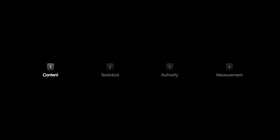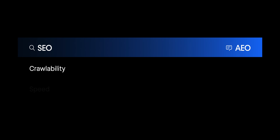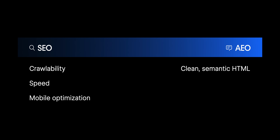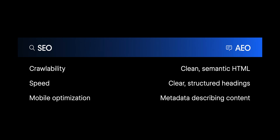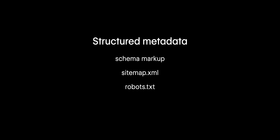Next, let's talk about the technical foundations for good AEO. In traditional SEO, most focused on crawlability, speed, and mobile optimization — all of which are still important. For AEO, there is now increased importance placed on making your site really easy for LLMs to understand. More than ever, that means using clean semantic HTML, clear and logically structured headlines, and metadata that describes your content's structure and meaning. Using structured metadata like Schema Markup, Sitemap.xml, Robots.txt, and LLMs.txt — those things help LLMs easily understand the structure and meaning of your content.